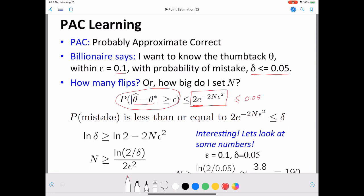And now probability of mistake is less than or equal to 0.05. So we can solve this separately. That's what we are doing next. Probability of mistake is less than or equal to 2e to the minus 2N epsilon squared less than or equal to delta. So delta is 0.05.